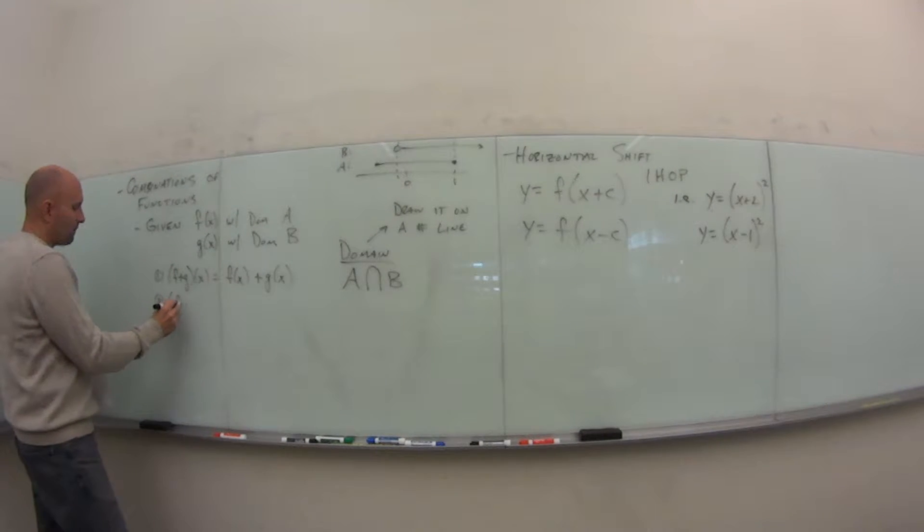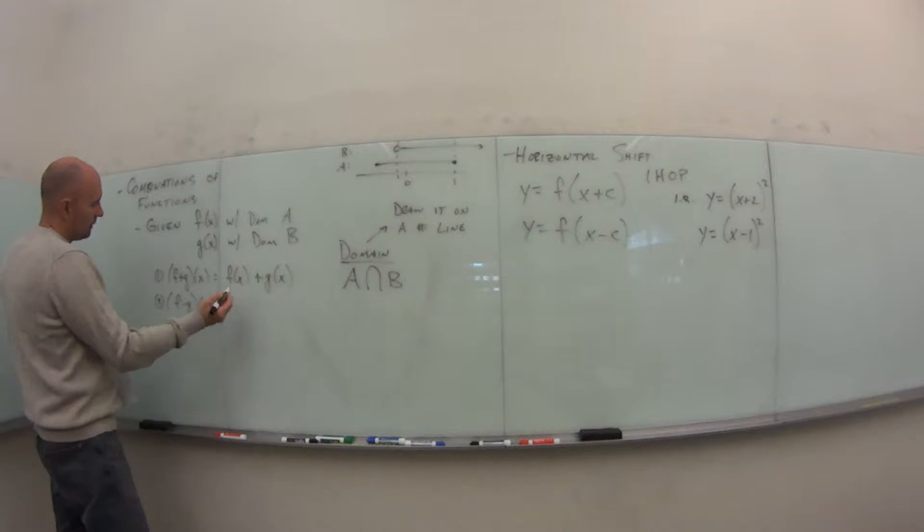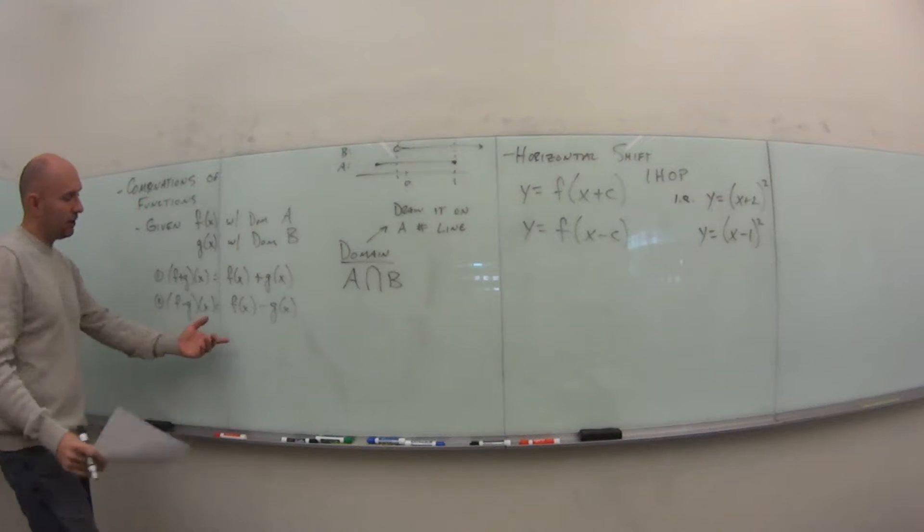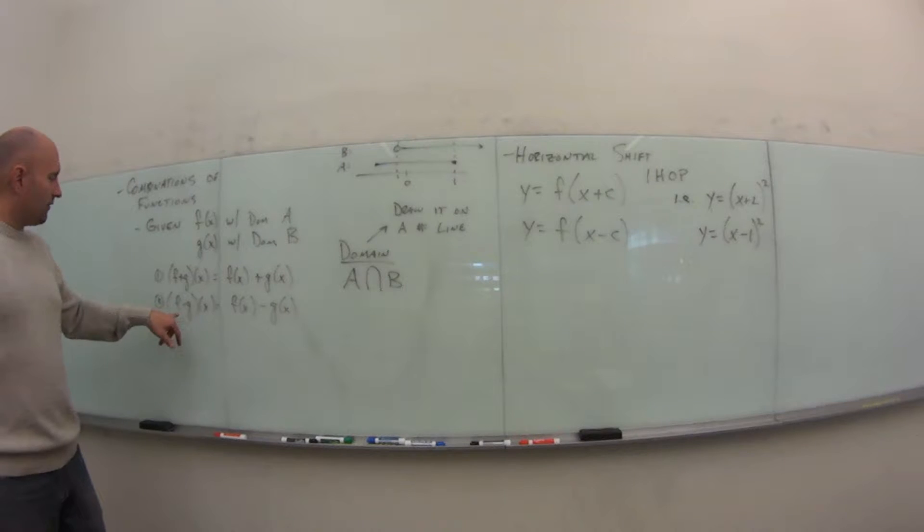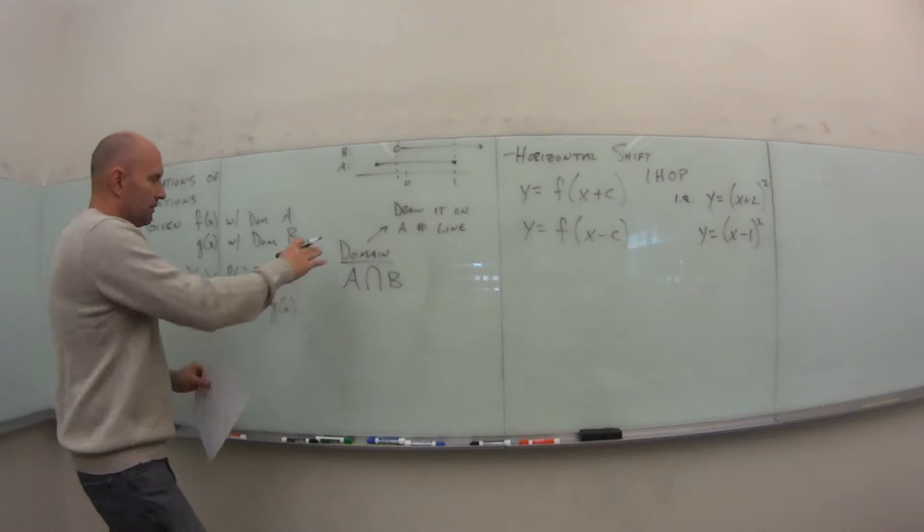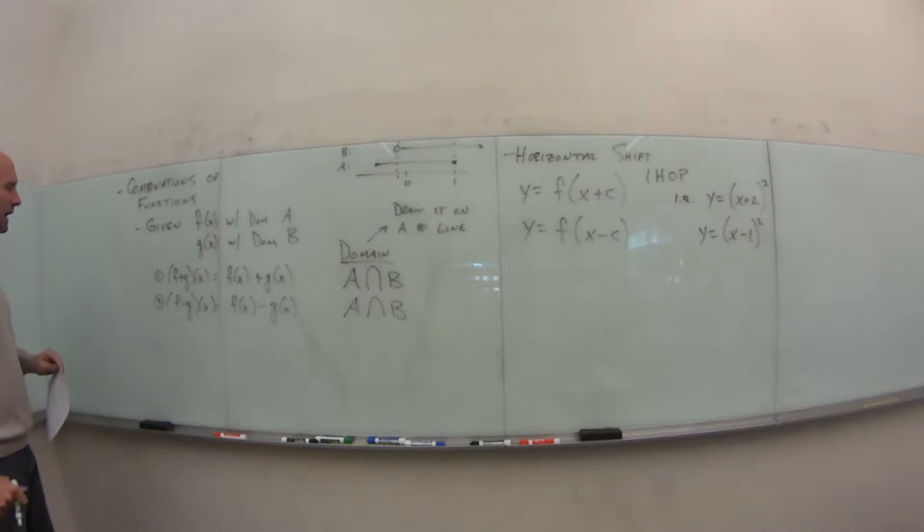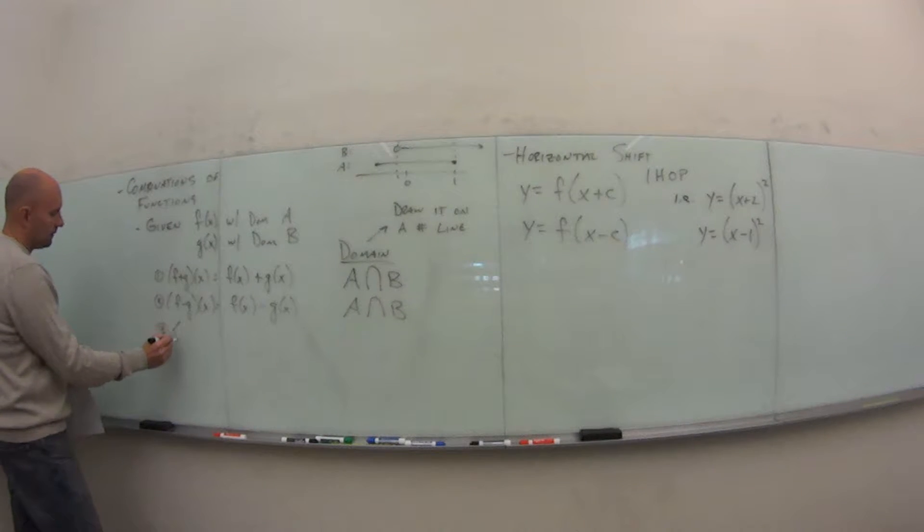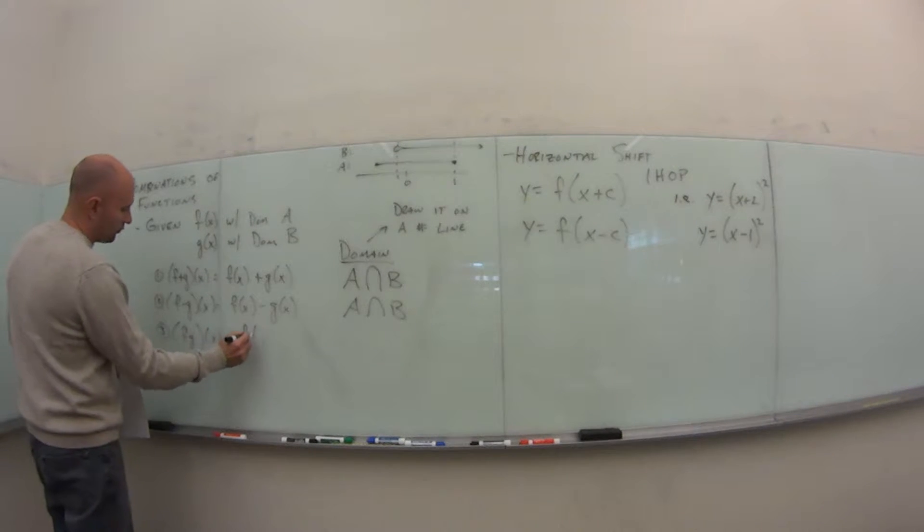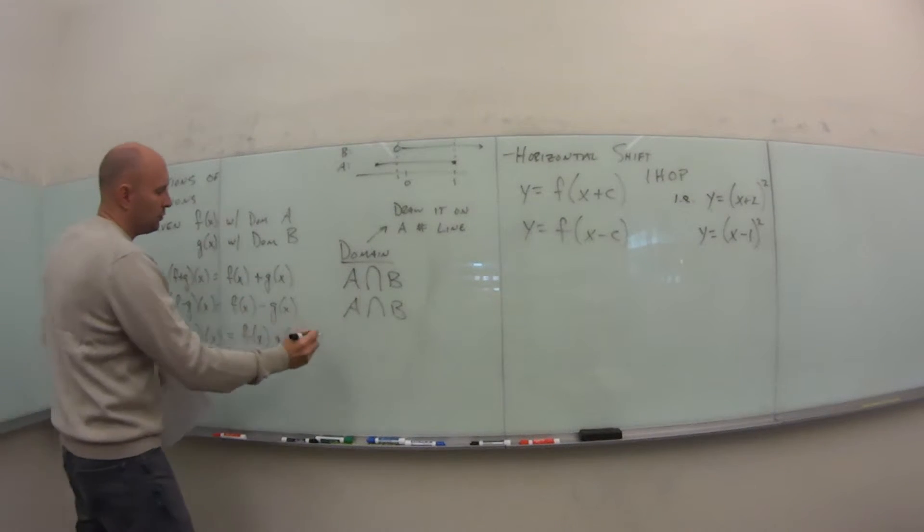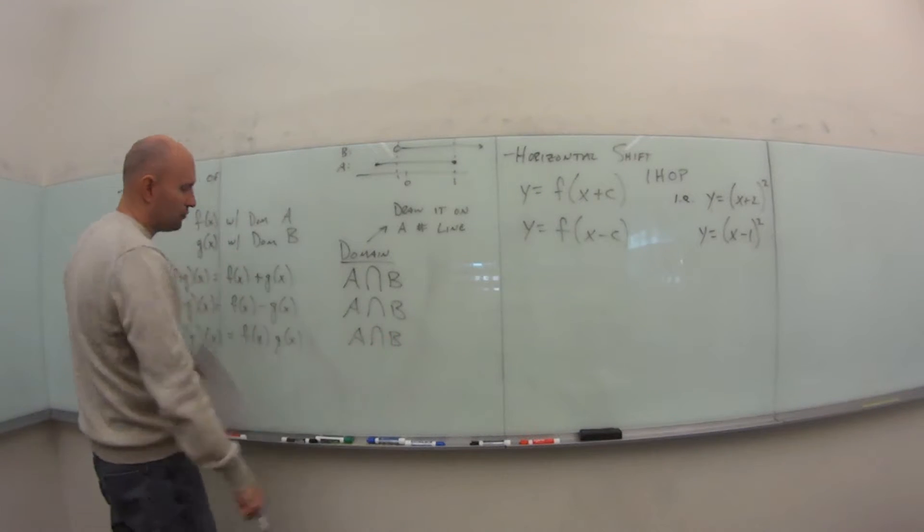If we have f minus g of x, well, just as above, the only difference is now it's f of x minus g of x. And be careful with the order. f minus g of x is different from g minus f, because of course these would be switched then. The domain is still the same, the intersection of the two domains that we began with. If we have fg of x, well, this is f times g, so it's just the f function times the g function. Again, the domain is the intersection of the two original.